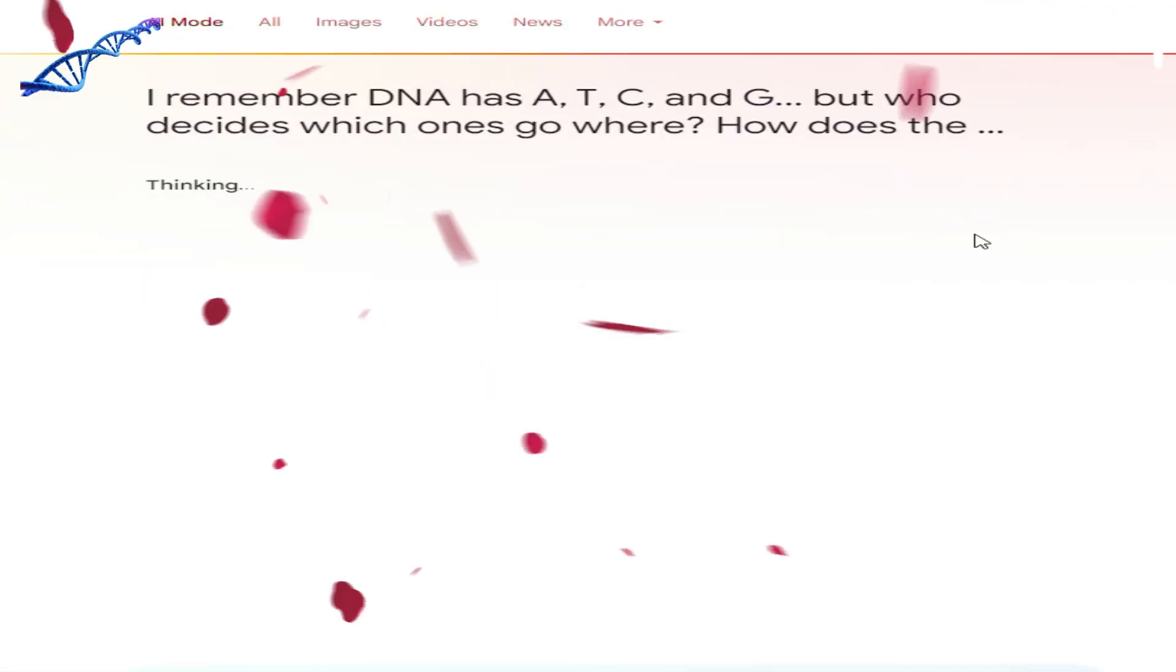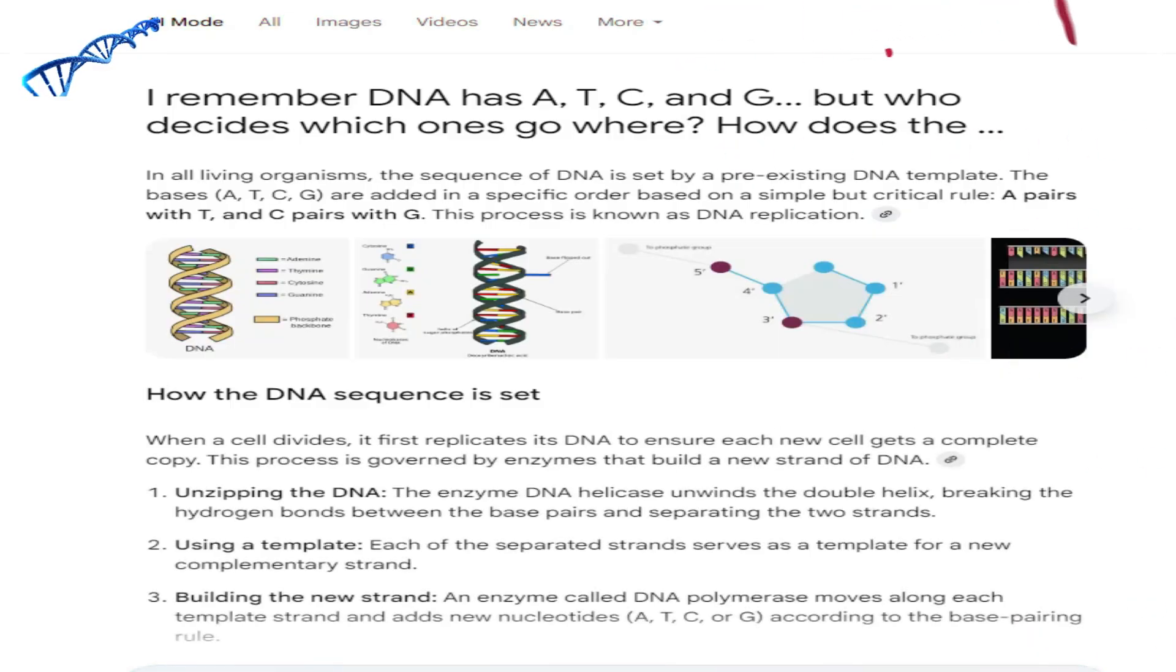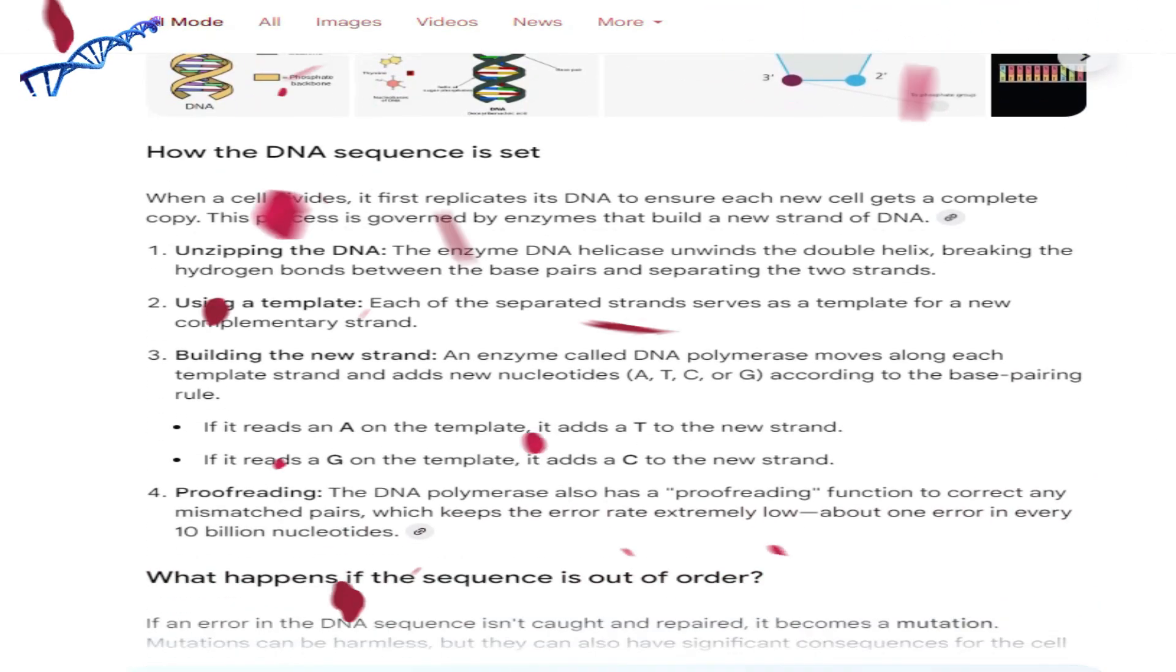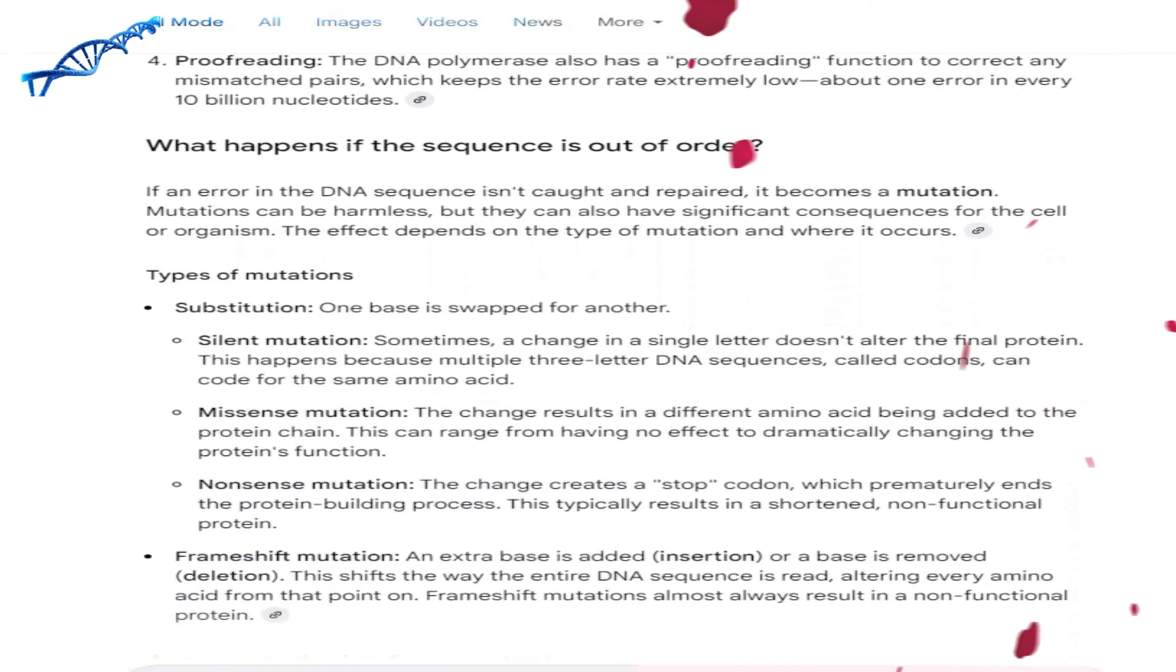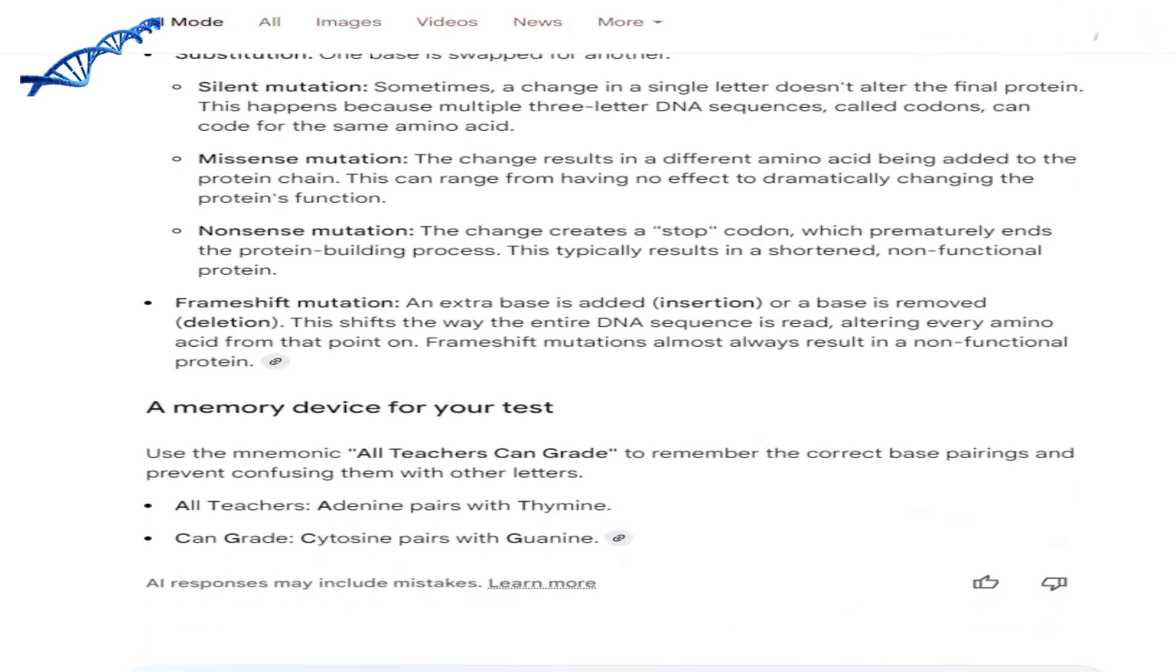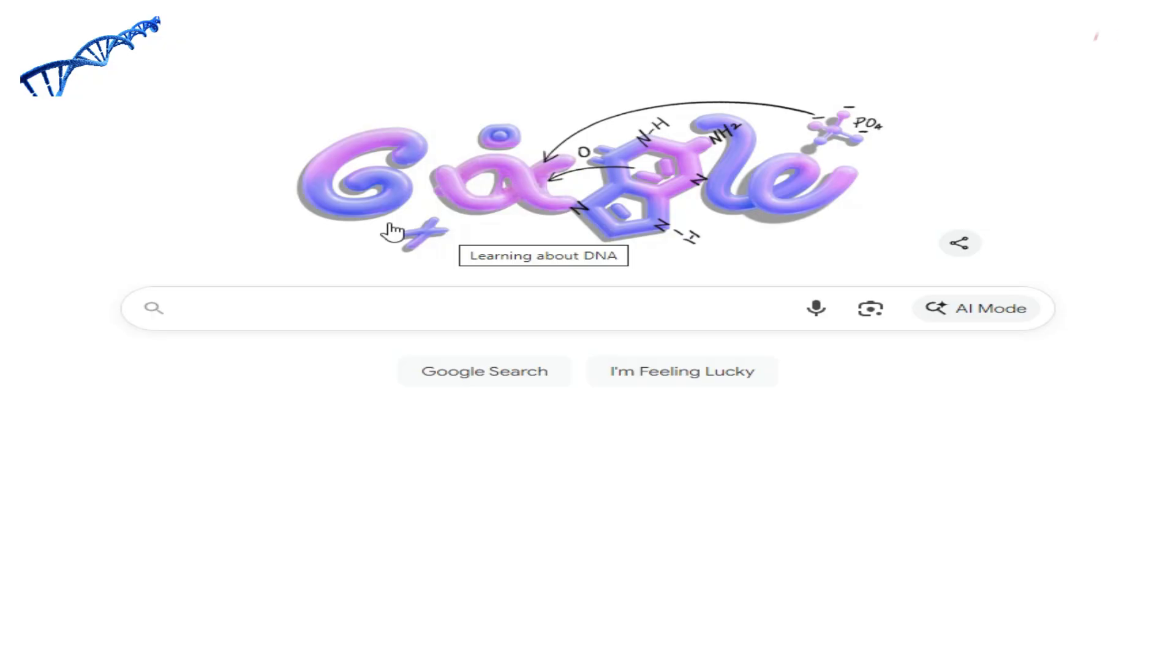AI mode in Google search answers questions about DNA: I remember DNA has A, T, C, and G, but who decides which ones go where? How does the sequence get set, and what happens if something goes out of order? What's a memory device I can use on an upcoming test?